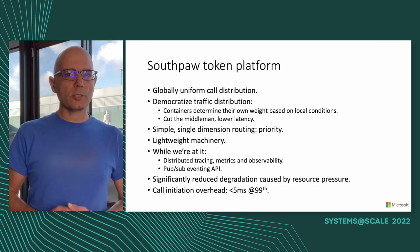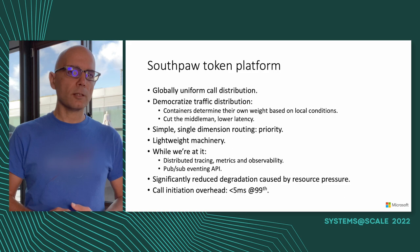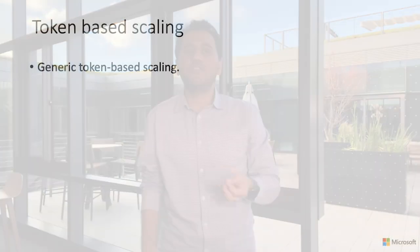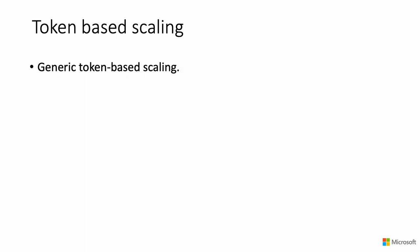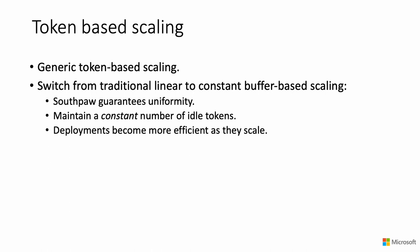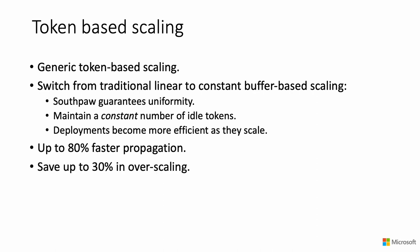As we solved the load balancing problem, we needed to increase the speed and responsiveness of our scaling. We utilized the tokens to switch from traditional compute metric scaling to discrete token scaling. This enabled us to maintain a constant number of idle tokens as opposed to a percentage of idle resources, which increases waste as deployment scales up. With token-based scaling, we increased scaling metric propagation speed by up to 80 percent and were also able to reduce over-scaling by 30 percent.